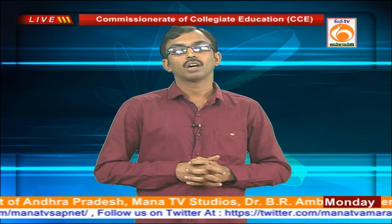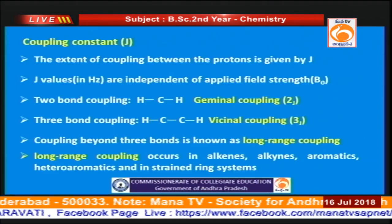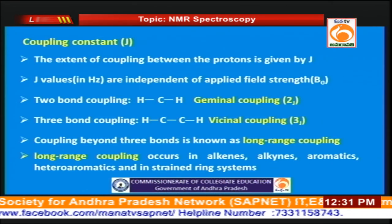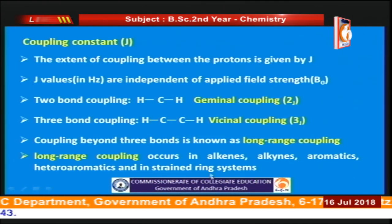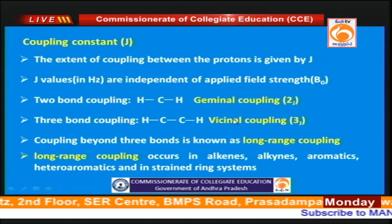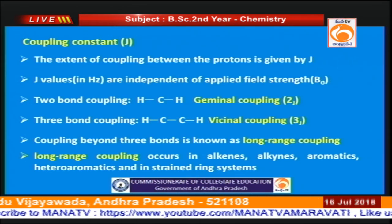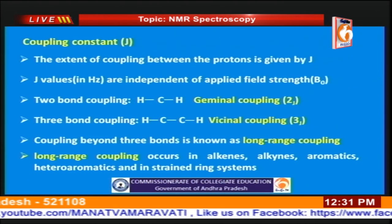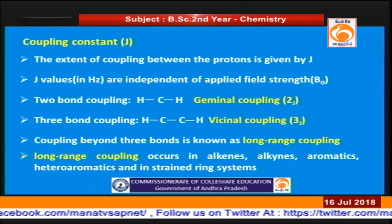Now let us consider the concept of coupling constant. The extent to which coupling takes place is determined by the coupling constant J, which is independent of the applied field strength. If the coupled protons are separated by two bonds, it is known as geminal coupling. If the protons undergoing coupling are separated by three bonds (as in vicinal coupling), it is known as vicinal coupling. Coupling beyond three bonds is generally known as long-range coupling and occurs in alkenes, alkynes, aromatic compounds, and retroaromatic compounds.